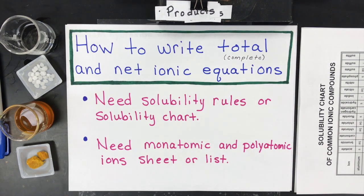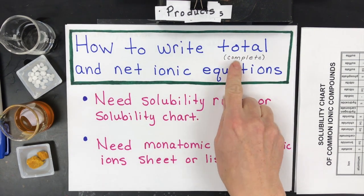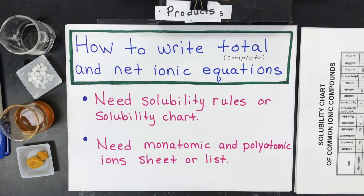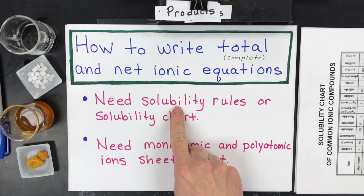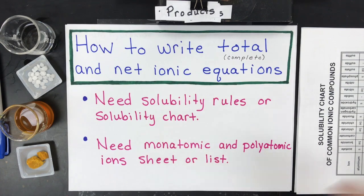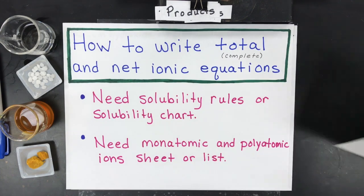Hello chemistry students. We're going to learn how to write total or complete and net ionic equations in this video. Two things you're going to need to find quickly first are a solubility rules or chart and a monatomic and polyatomic ion sheet.